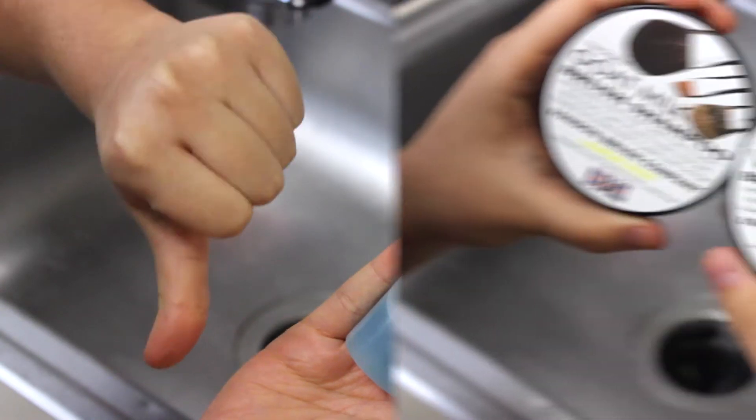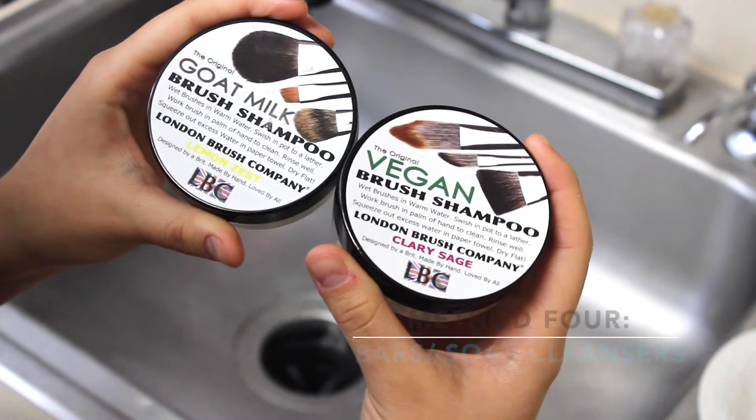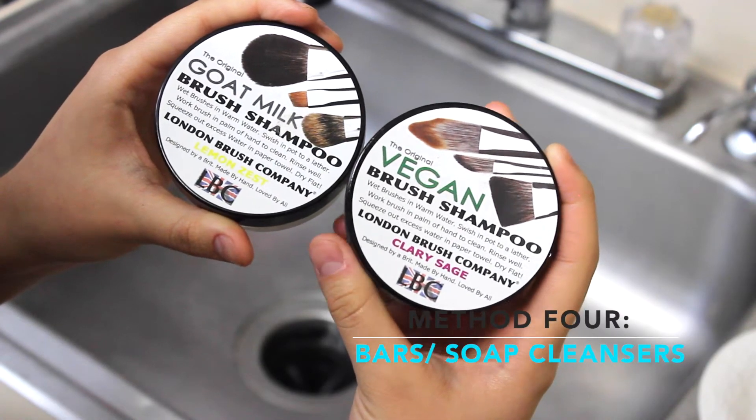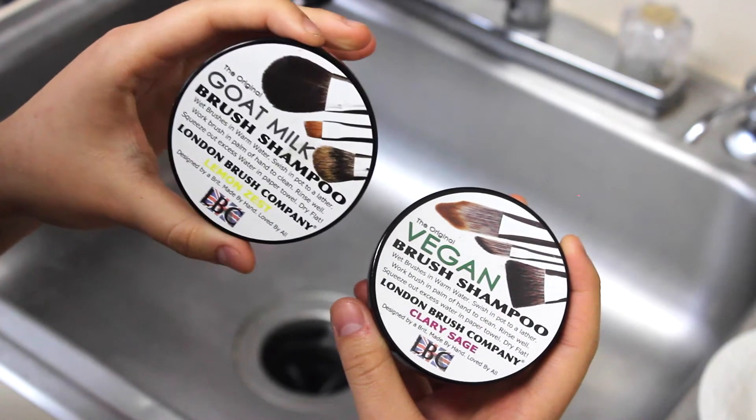So the last method I'm going to show you guys is the bar soap cleansers, and it's going to be the method that I'm going to be doing today. I'm going to be using this goat milk brush cleanser from London Brush Company.